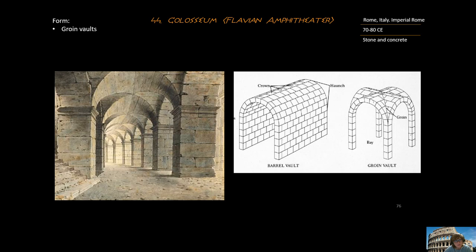Not only are there barrel vaults, there are also groin vaults. A groin vault is like the intersection of two roads — it is the intersection of two barrel vaults. We use those in architecture because they create a bigger archway and really allow crowds to exit and enter a large structure.